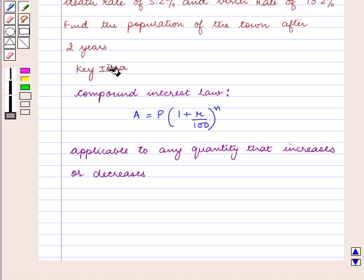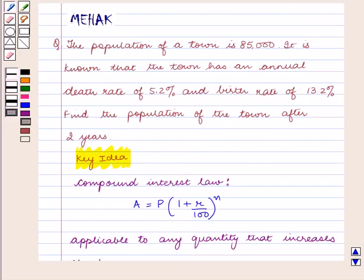With this key idea we shall proceed with the solution. According to the question we are given the population of a town as 85,000 and we need to find the population of the town after 2 years where the death rate is given to be 5.2% and the birth rate is 13.2%.